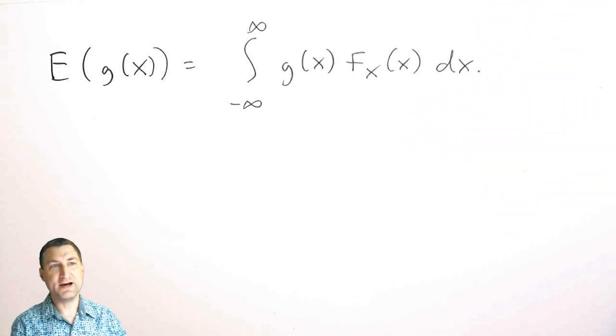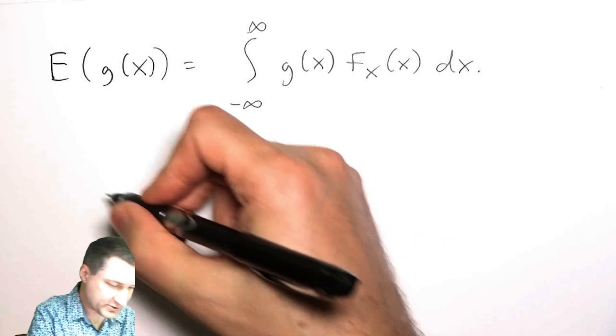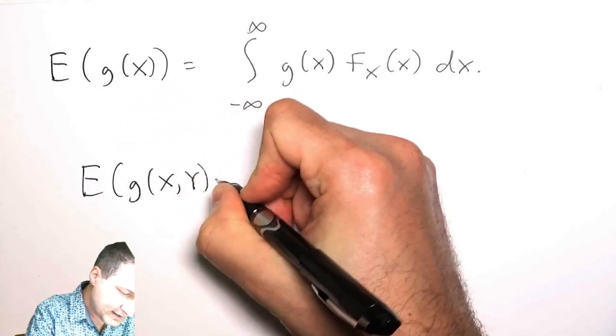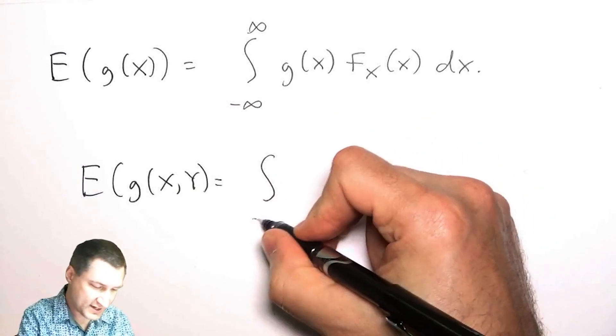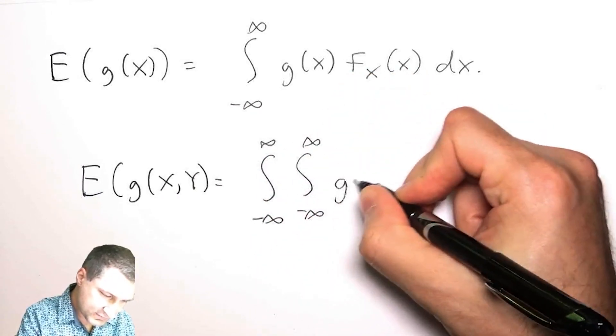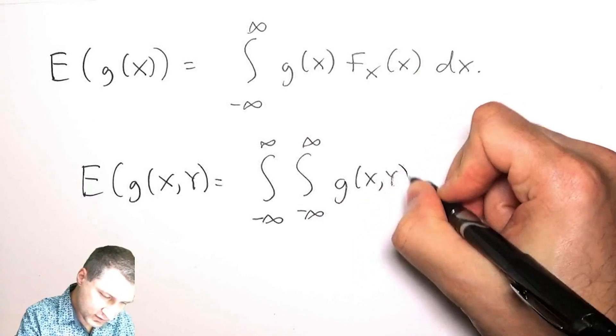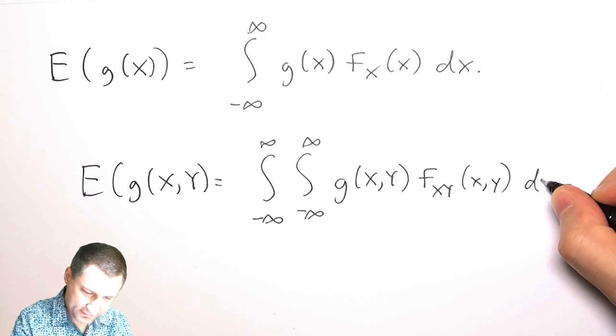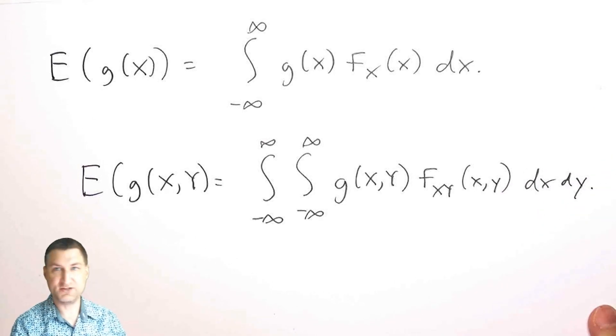Same thing is true now, except if I have a function that involves both X and Y, I need to use the joint PDF instead of the marginal. So if I have some function of both X and Y, it stands to reason that what I do is I integrate these possible values across the joint PDF dxdy.